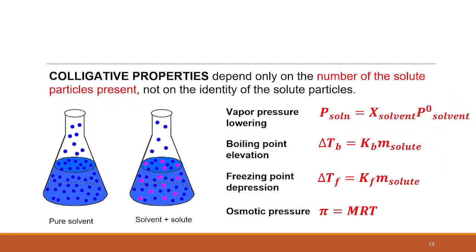In summary, colligative properties depend only on the number of solute particles present, not on the identity of the solute particles. That is also the reason why the formulas usually only require knowing the mole fraction or amount of solute particles present, as this is very important in computing our colligative properties. Those would be the concepts for colligative properties.